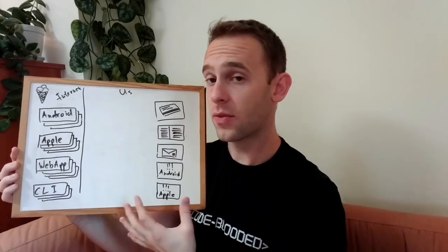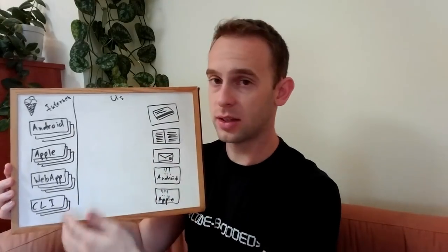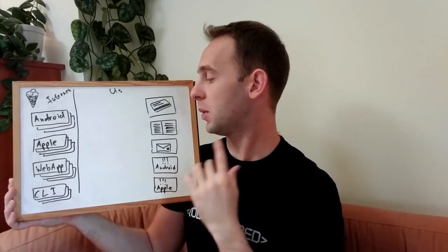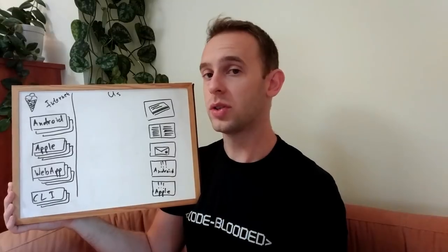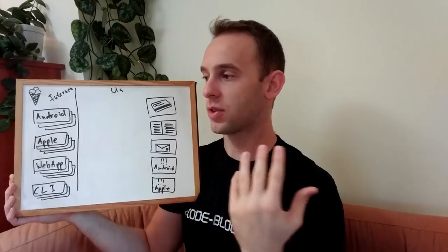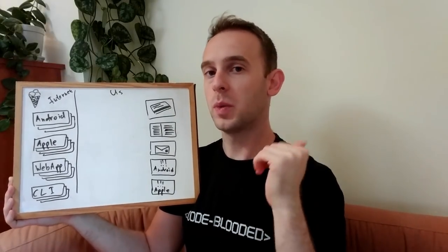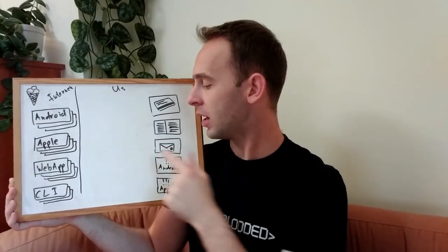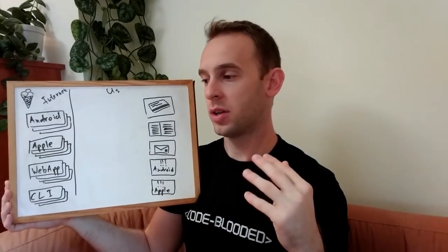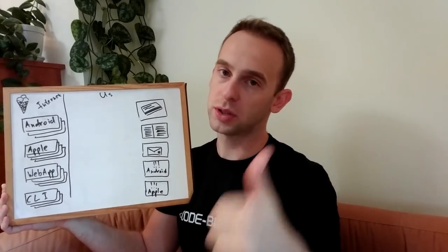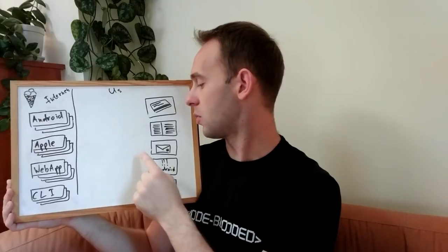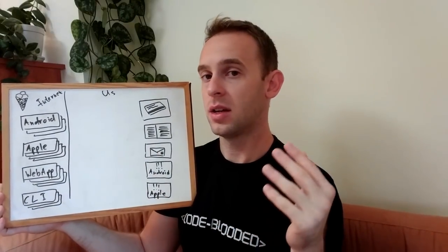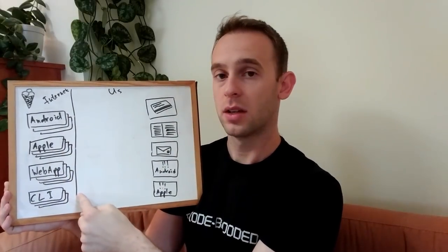What will happen if we change the emailing service API and now want some other parameters to send the email? For example, we originally only wanted the email address and sent a general message saying 'you have ordered an ice cream, congratulations.' Now we want to send the email more precisely with more accurate information — the name of the person who ordered and the type of ice cream they ordered. So now each and every type of client should update this information.